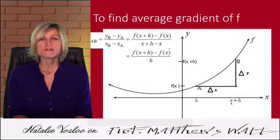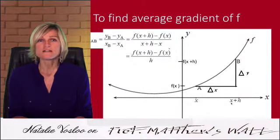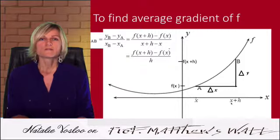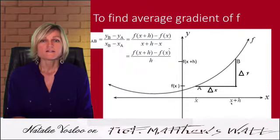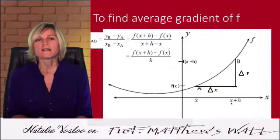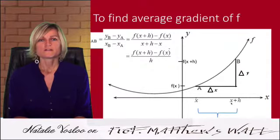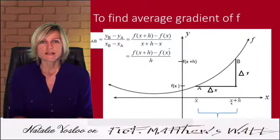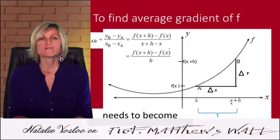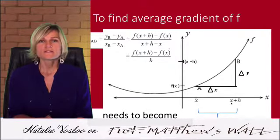Now that distance h needs to become very small in order for this gradient to interpret a gradient at a point, instead of a gradient over two points between A and B. So the distance between x and x plus h would be h, and we need that to become very, very small in order for the gradient to become the derivative at a point.